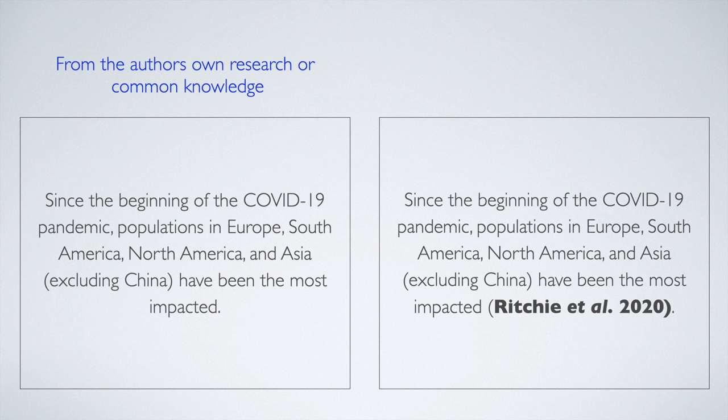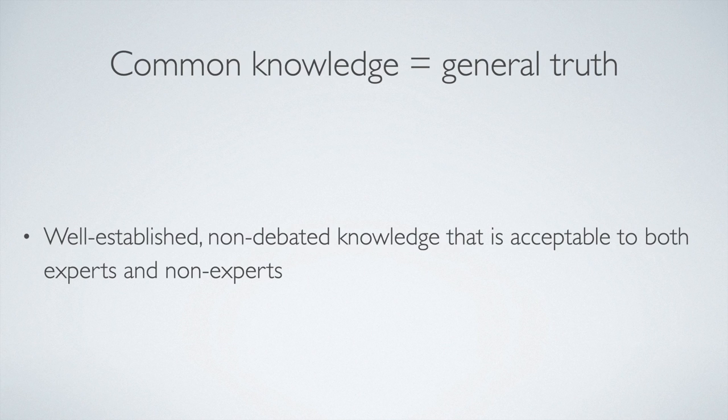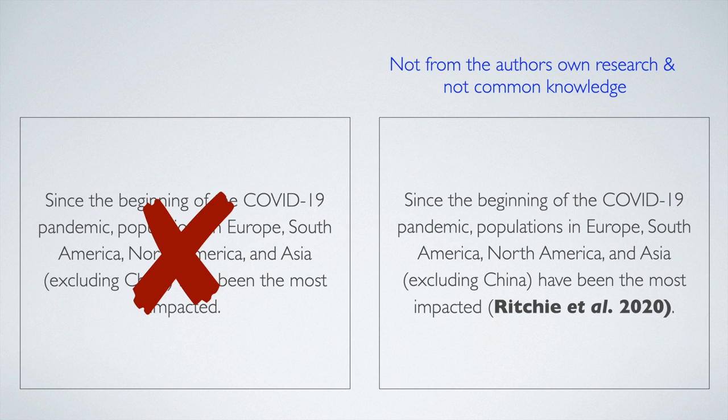Common knowledge can also be referred to as a general truth and it is well-established, non-debated knowledge that is acceptable to both experts and non-experts. However, the information contained in this sentence was taken from a website. Therefore, the source needs to be cited. That is, Richie et al. 2020. Without the citation, you are confusing the reader about the source of the information.